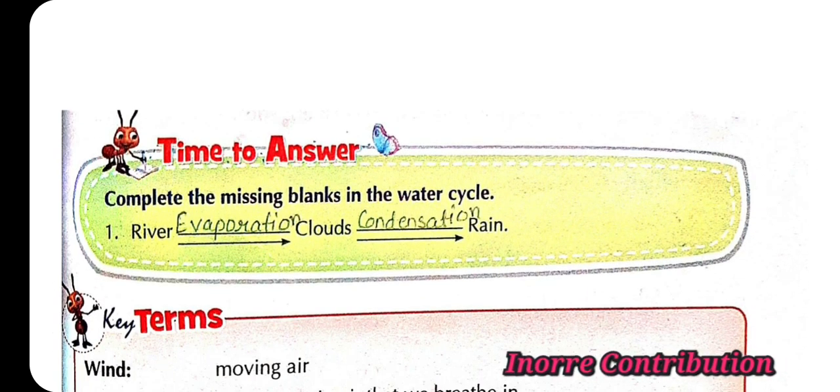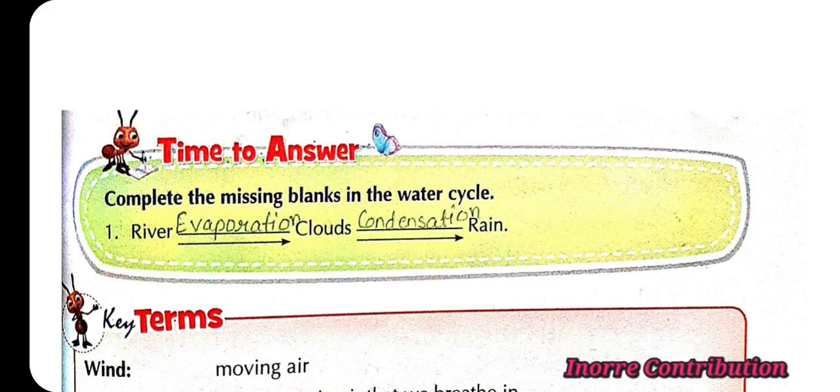Time to answer. Complete the missing blanks in the water cycle. River, evaporation, clouds, condensation, rain.